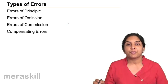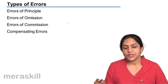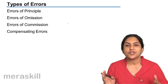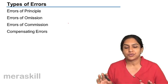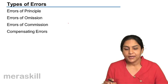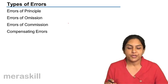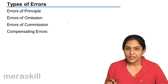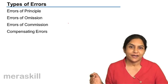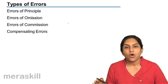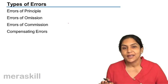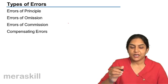Errors of principle — what is an error of principle? Usually, an error of principle arises when a capital expenditure has been taken as a revenue expenditure, or a revenue expenditure has been taken as a capital expenditure.